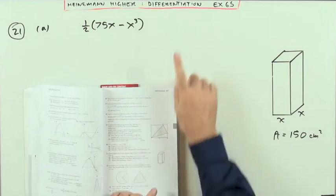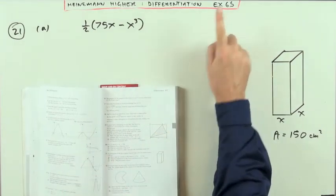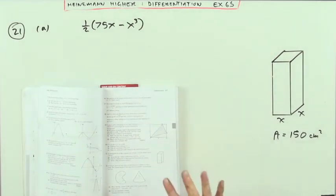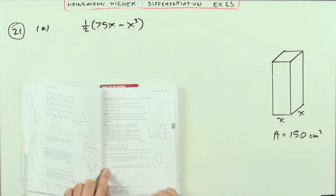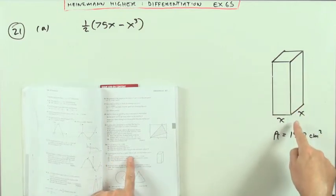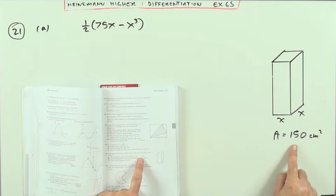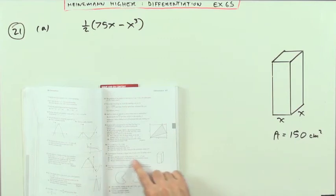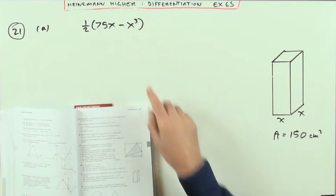Right, Heinemann Higher, chapter 6 on differentiation, mixed exercise 6s at the end, the optimisation part. Question 21, there's a rectangular block with a square base of side x, tells you the surface area, and it says show that the volume is given by this expression here.